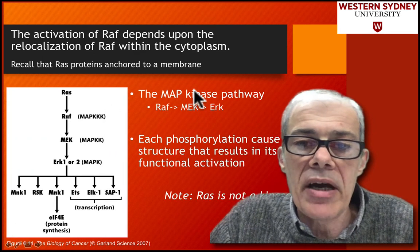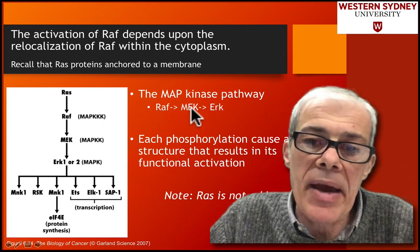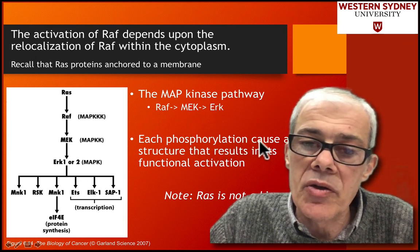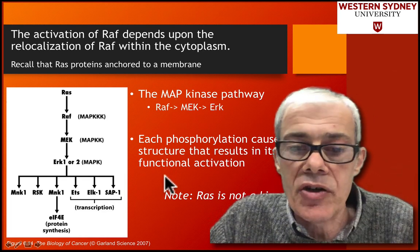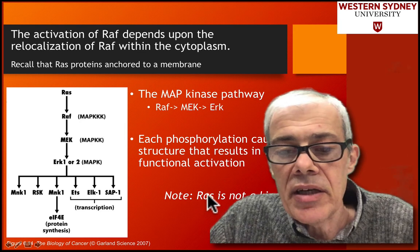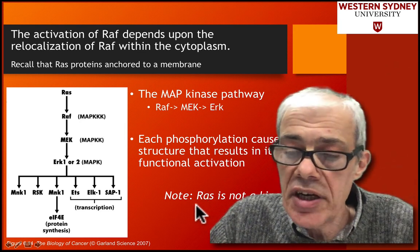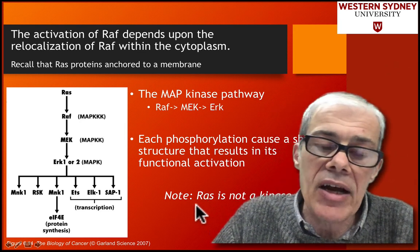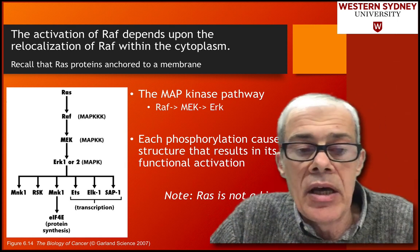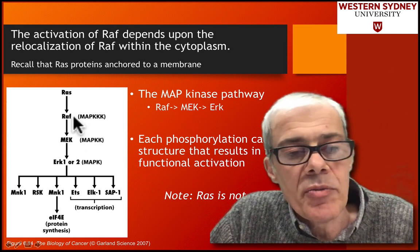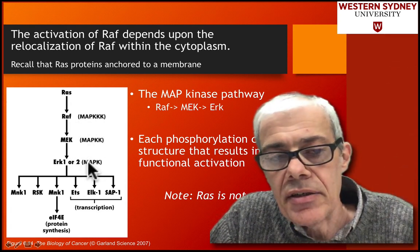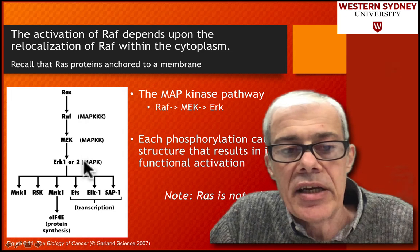The MAP kinase pathway is RAF, MEK, and ERK — each phosphorylates the next, which causes a shift in structure, resulting in functional activation. One note is that RAS itself is not a kinase; we've discussed how RAS is switched on through nucleotide exchange. Also, none of these kinases in the pathway are tyrosine kinases — they are all serine-threonine kinases.